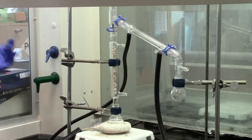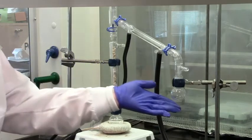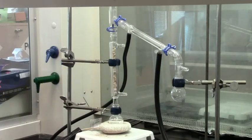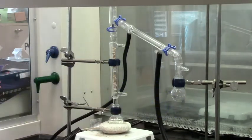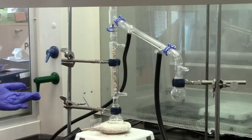So flask A, or the first flask, will be mostly cyclohexane. The second flask will be mostly a mixture of cyclohexane and toluene. And then when I substitute for the third flask, that should be mostly toluene.